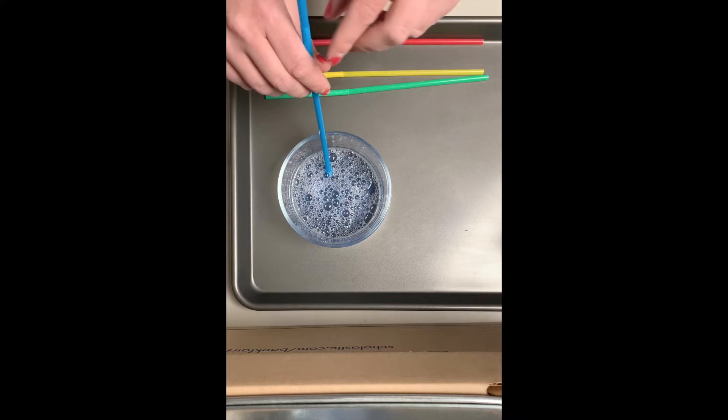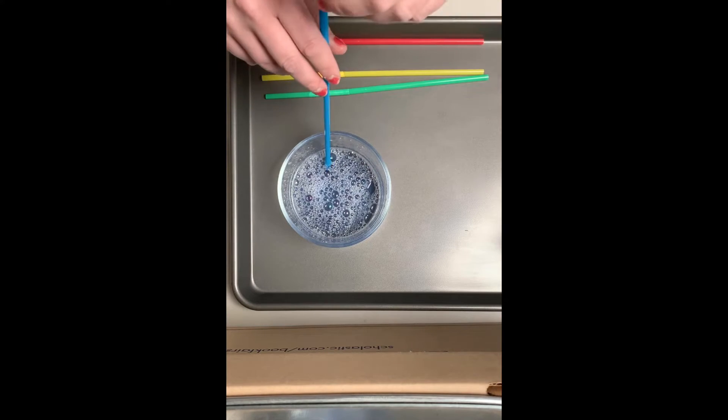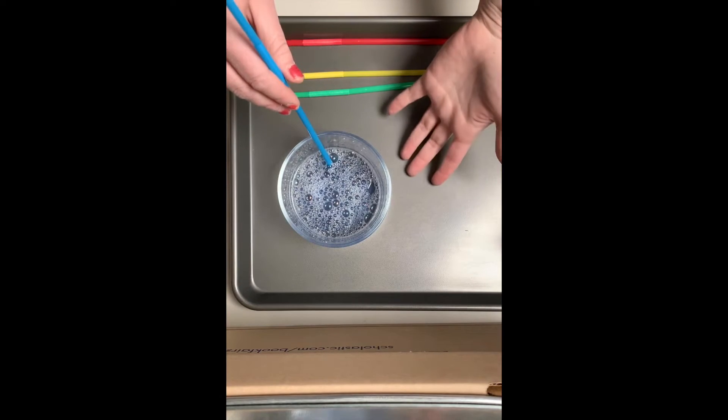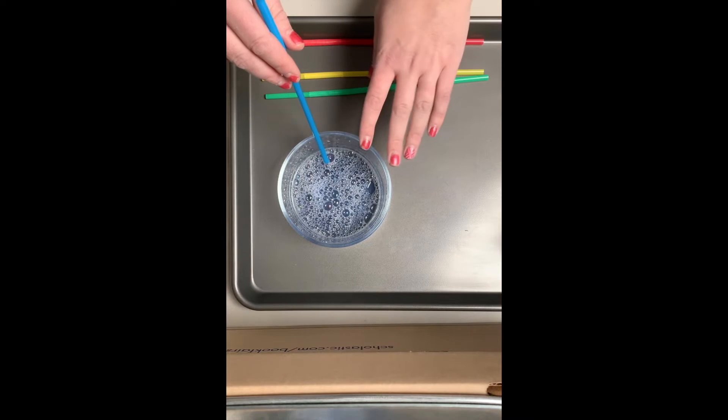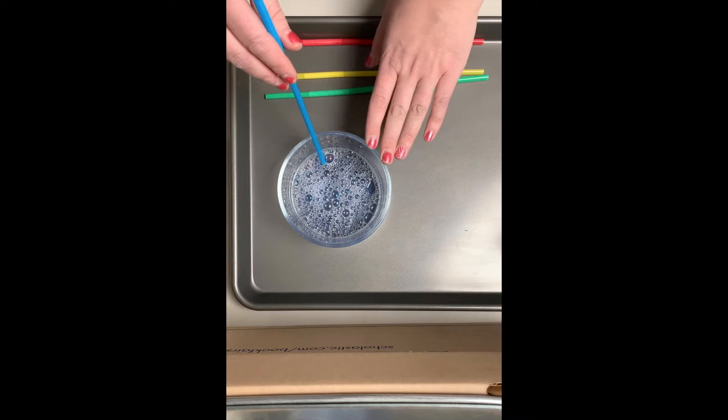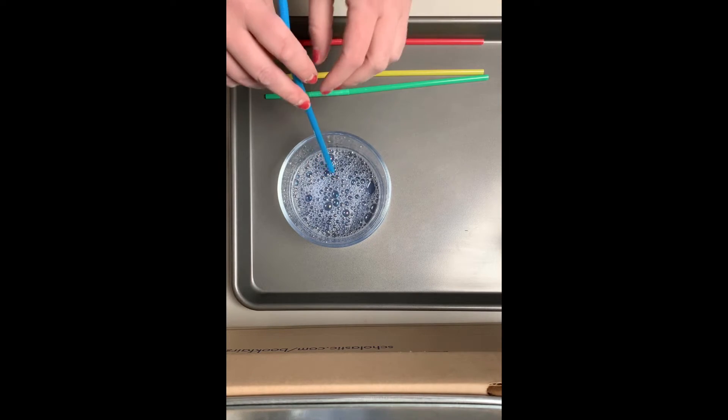This is what you're gonna do. You're gonna take your straw, put it in the mixture, and you're gonna start blowing. You don't want to blow too hard so that your bubbles come out of your bowl, you just want to blow enough so that they come all the way up to the top of your bowl. So let's try that now.